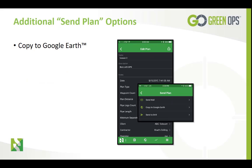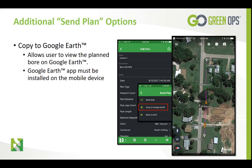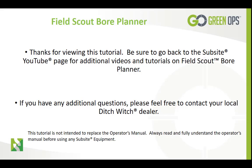An additional Send Plan option includes the ability to copy the plan to Google Earth, which allows the user to view the planned bore as long as they have Google Earth installed on the mobile device. You also have the option to send the plan to the drill, which allows the user to upload the planned bore to the Commander 7 — this process will be covered in a later tutorial. Be sure to go back to the Subsite YouTube page for additional videos and tutorials on Field Scout Bore Planner. If you have any additional questions, please feel free to contact your local DitchWitch dealer. Thank you for watching.